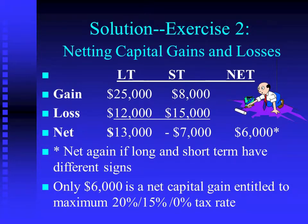Our preferential rate will only apply to $6,000. So depending on our marginal tax rate schedule, we'll be taxed at 20%, 15%, or 0% on that $6,000.